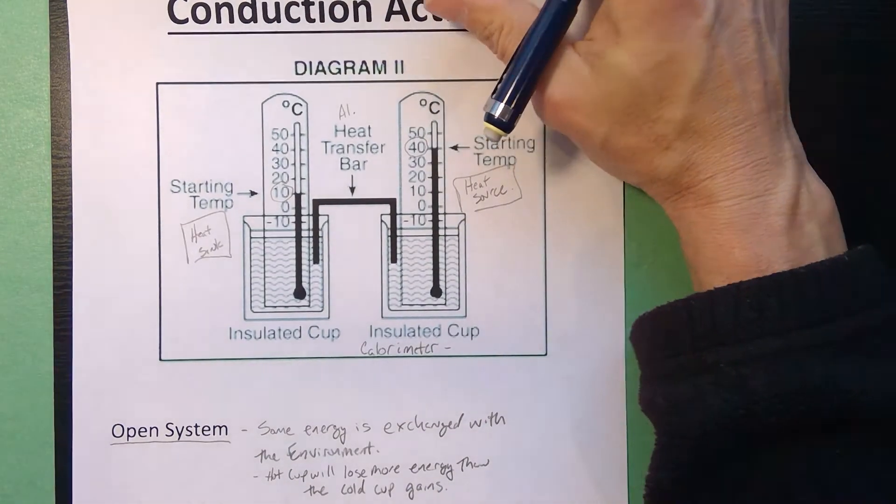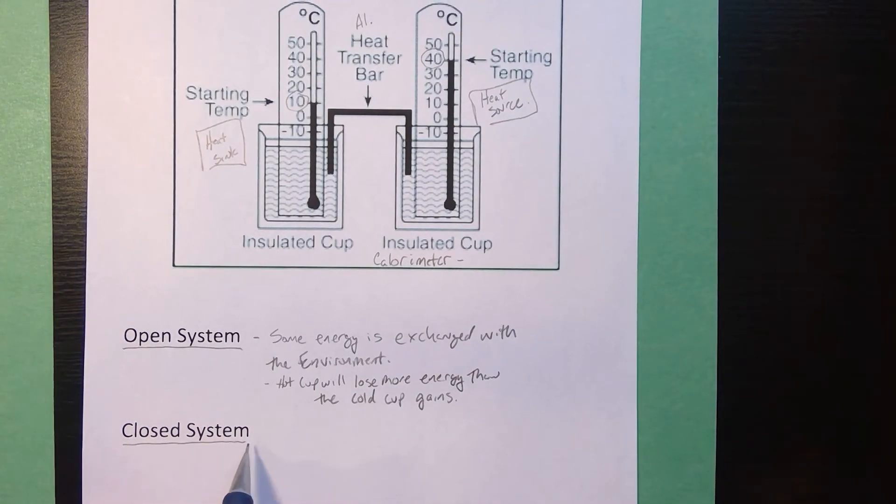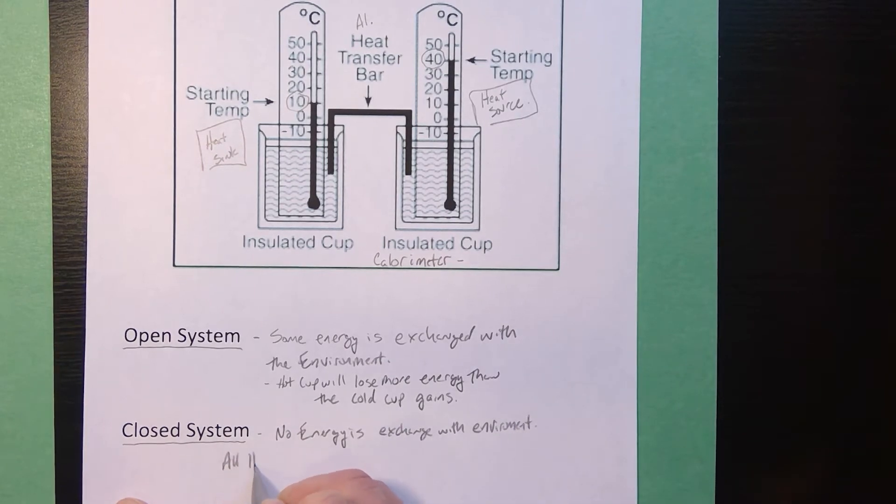Now if you could create what's known or referred to as a closed system, in a closed system it's like a magic box, nothing gets in and nothing gets out. So the characteristics of a closed system, which never really happens. In a closed system no energy is exchanged with the surroundings or the environment. So all the heat lost by the source would equal the heat gained by the sink.